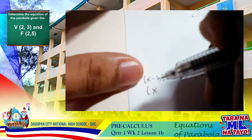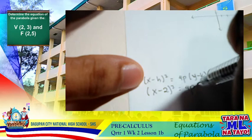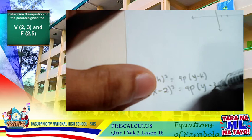So we have quantity x, your h is 2, so we have minus 2 square equals 4p quantity y, your k now is 3, which is now minus 3.